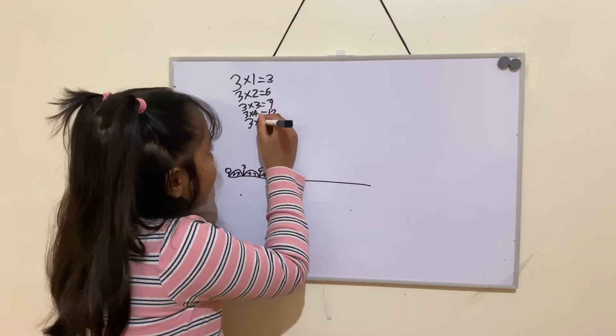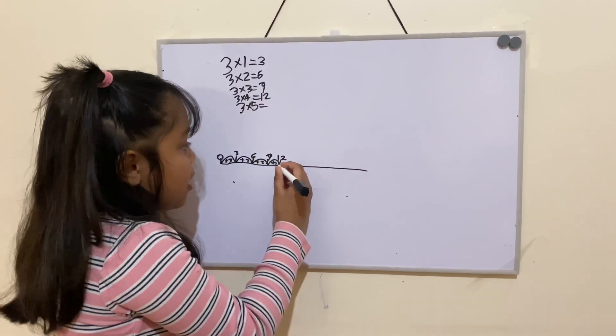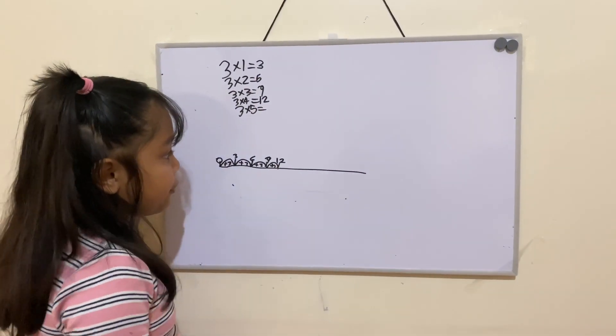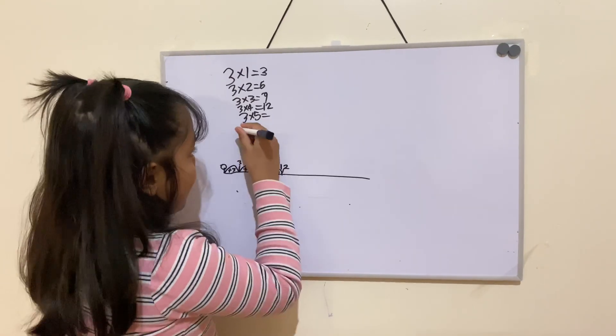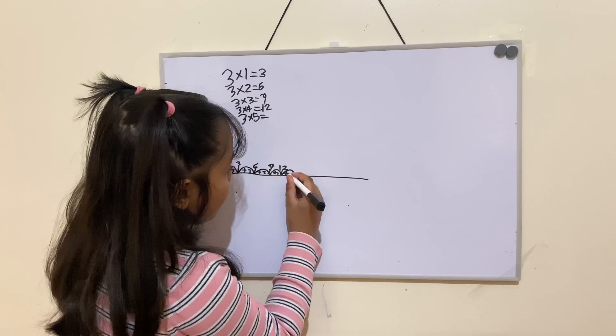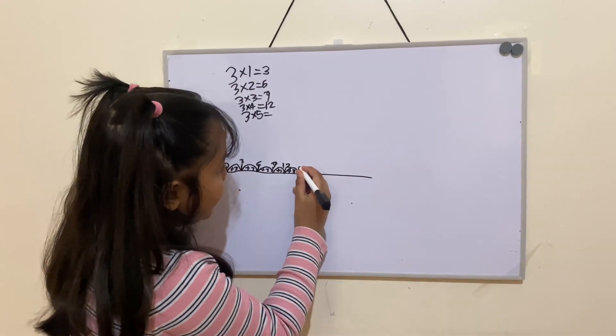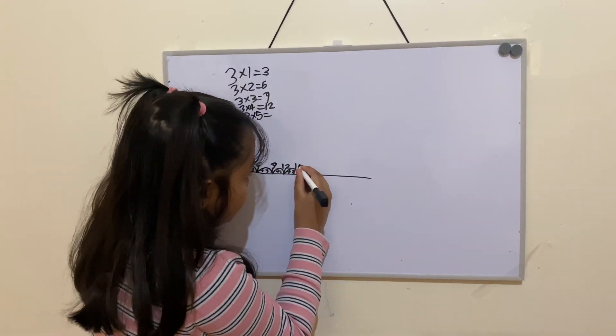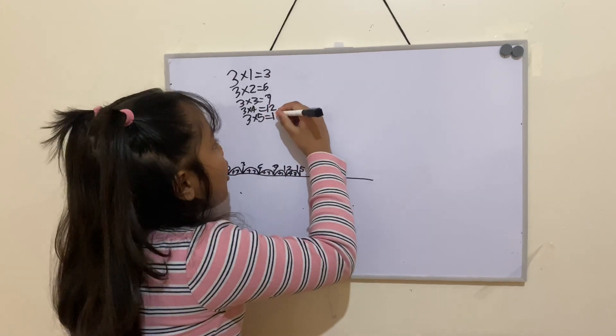3 times 5. I need to add 3 more because it's the 3 times tables. Add 3 equals 15. The answer is 15.